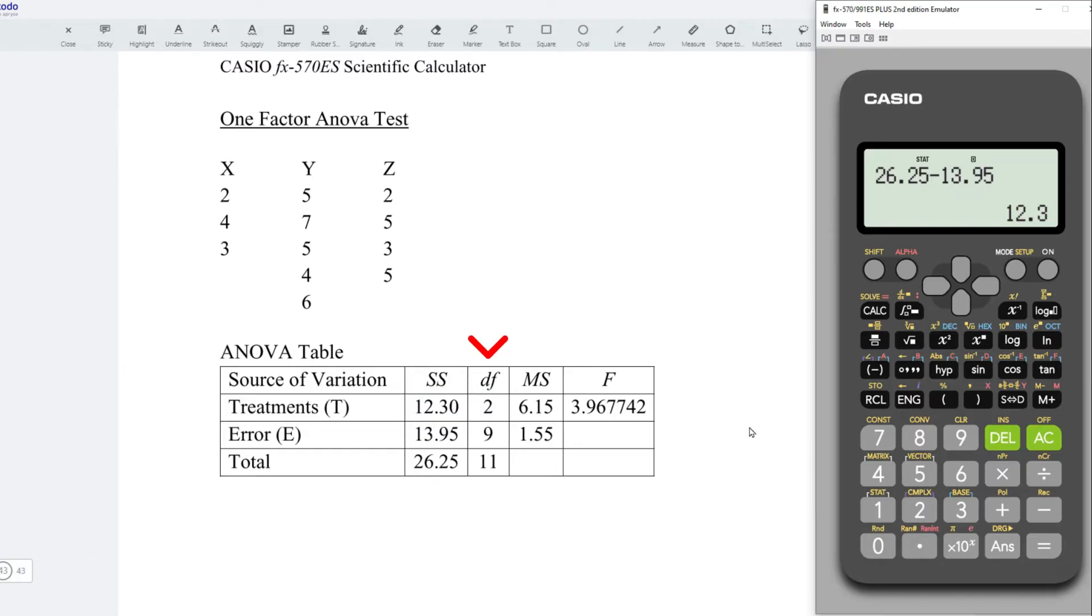For degree of freedom, since we have 3 treatments, minus 1, obtain 2. For total, since we have 12 observations, minus 1, we have 11. Then we take 11 minus 2, obtain 9. That is the degree of freedom for the error.